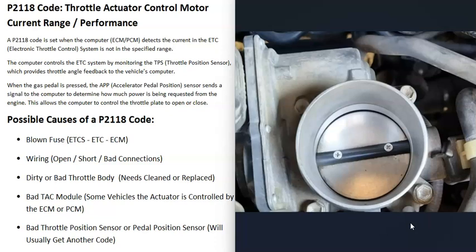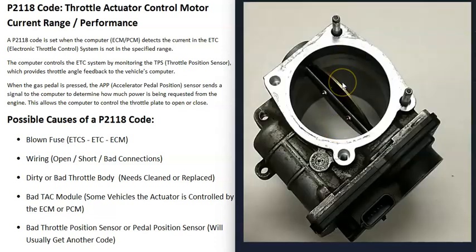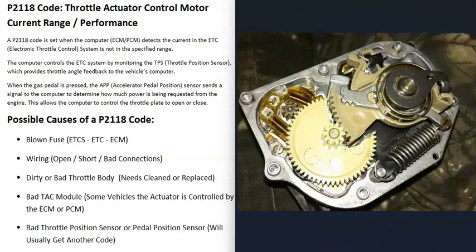If the throttle body has just gone bad and needs to be replaced, these throttle bodies have a small motor and gears built in to open and close the plate. If those go bad, it won't open or shut correctly. Sometimes you can even listen to the throttle body — if you hear the motor making unusual noises, that's a sure sign it has gone bad.